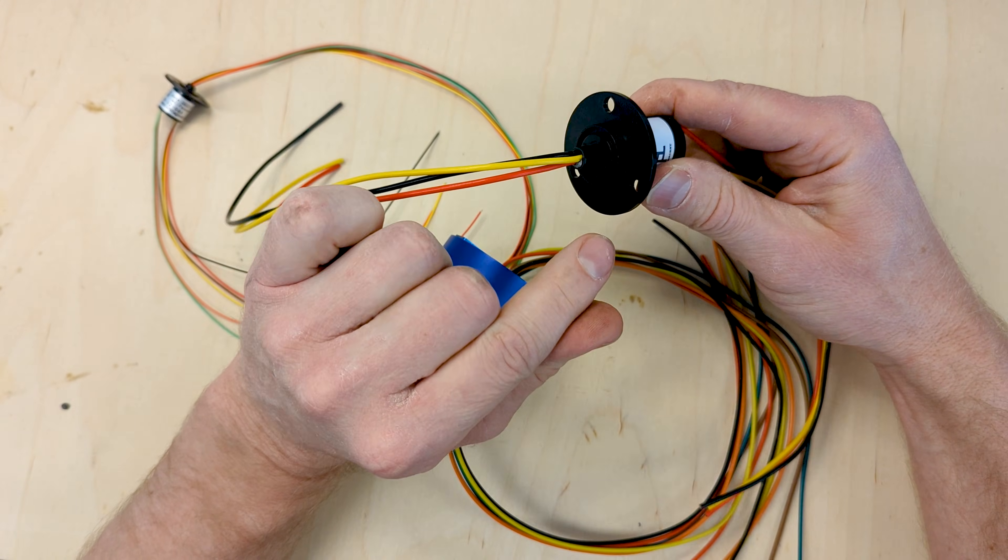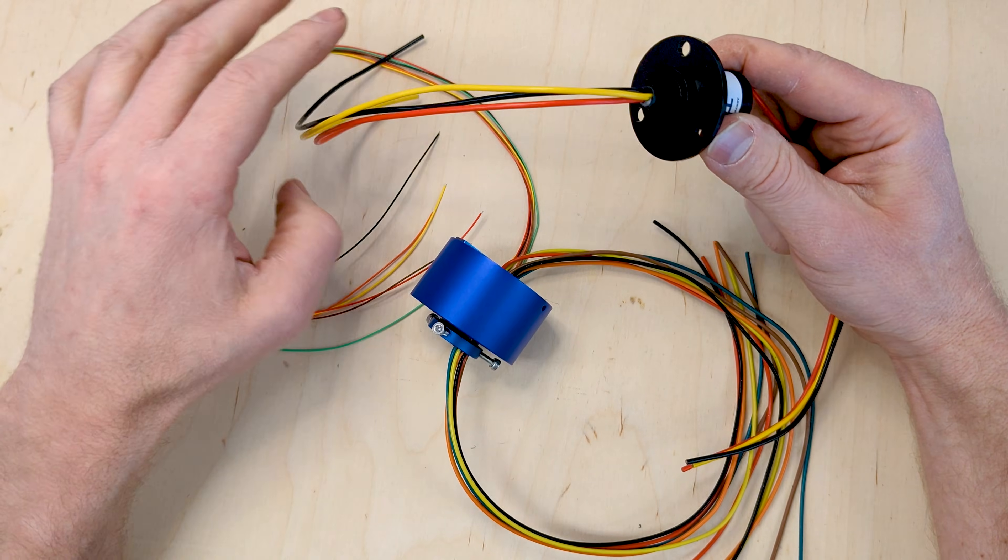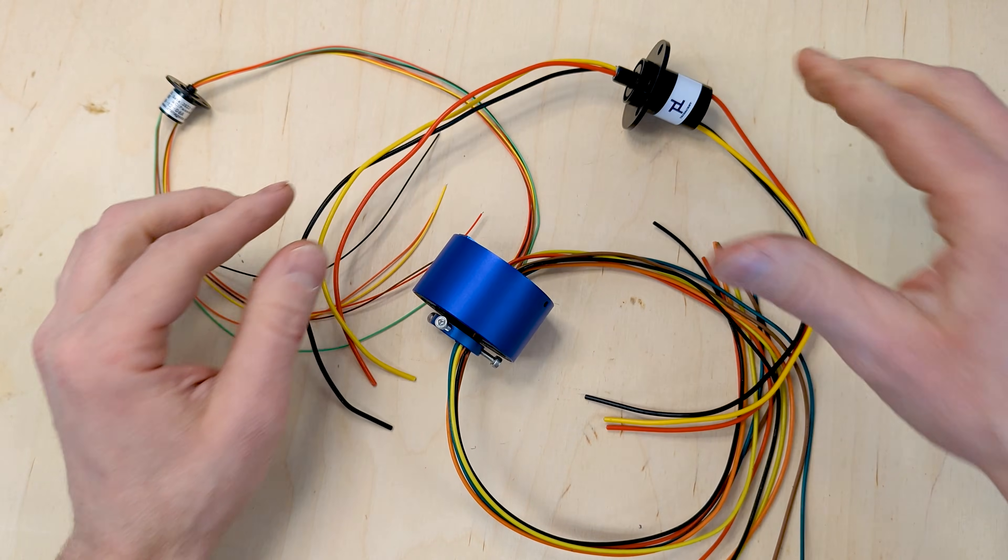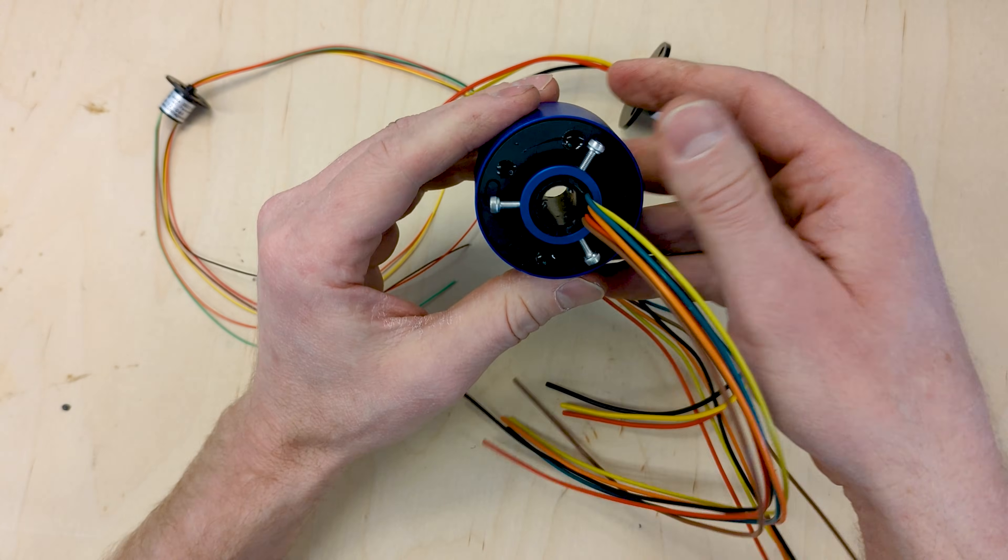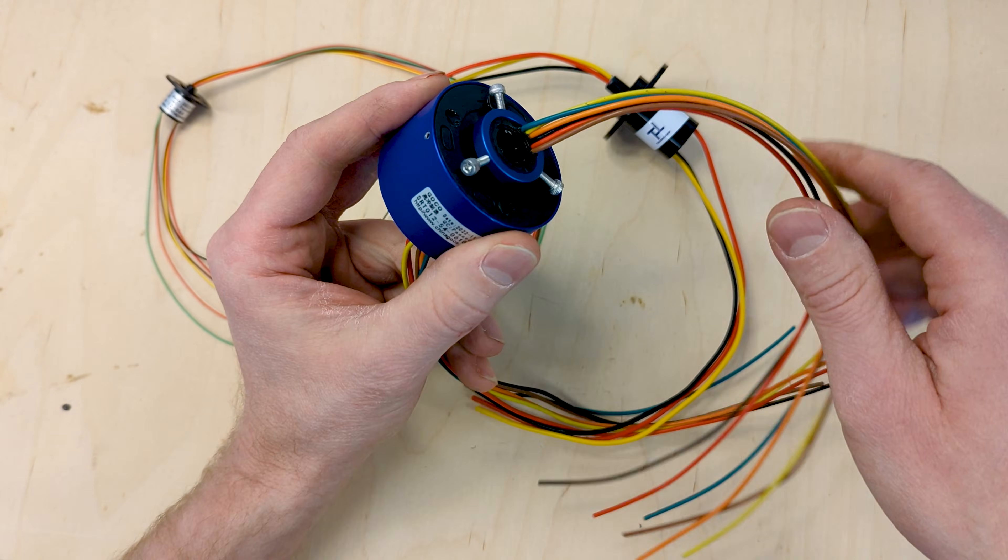But sometimes these can be hard to mount on something. A lot of times you might have a motor turning something or a shaft, and that's where these hollow bore slip rings come in handy.